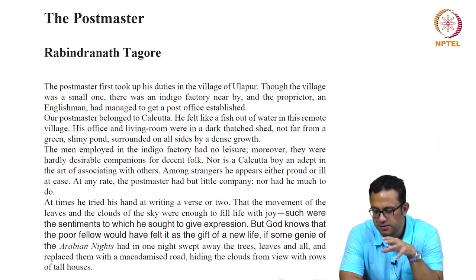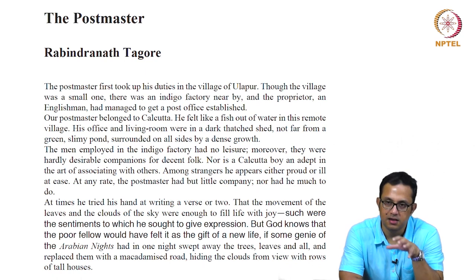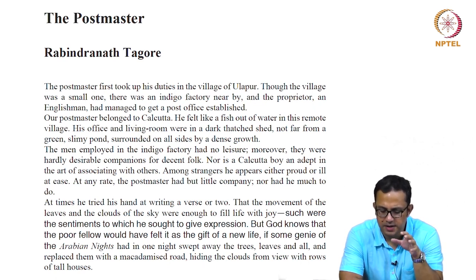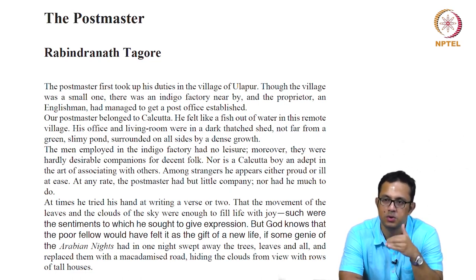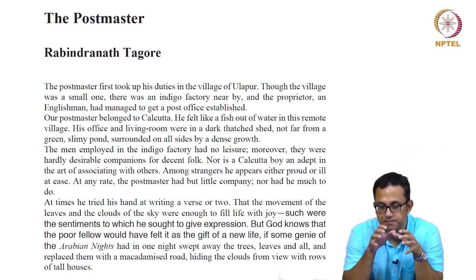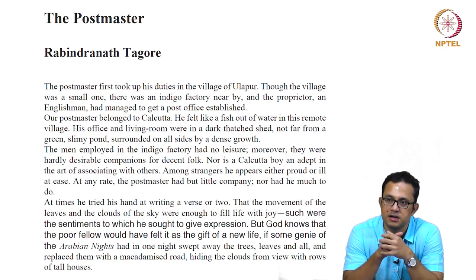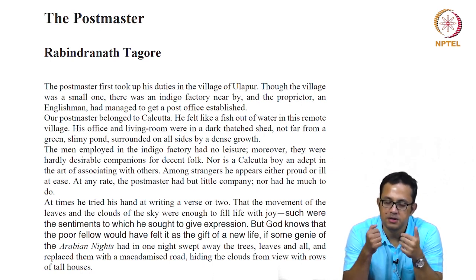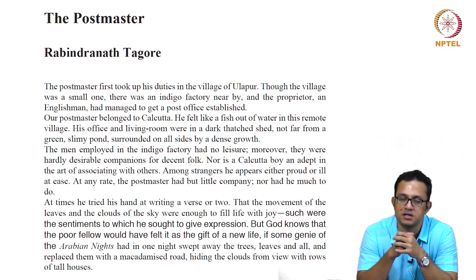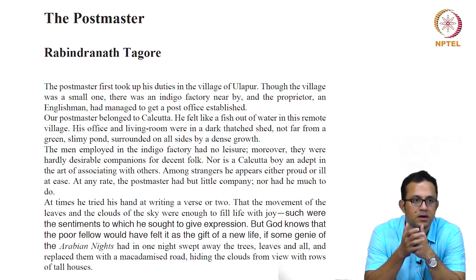Some very symbolic things about the story — the sites are very important. The very site of the post office is a colonial signpost, as it were, and we have the indigo plantation industry which is also a colonial site. So we have these colonial spaces alongside which the postmaster is situated, and we have the human subject negotiating with the colonial spaces around him. The entire story is about the alienation of a city person in a rural setting, and the very empathetic bond he establishes with a little girl called Ratan.